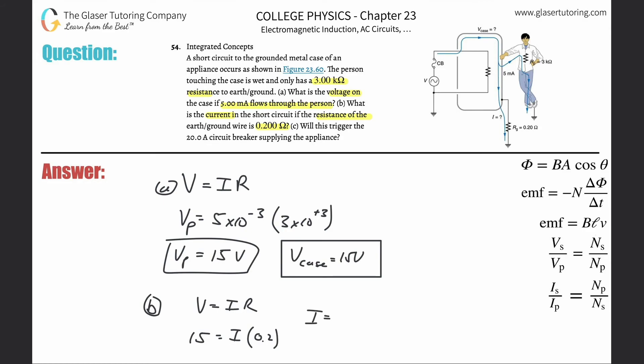So now when we take this, I is going to be equal to 15 divided by 0.2, and that works out to be 75 amps. So that is now the current that's flowing in the short circuit.